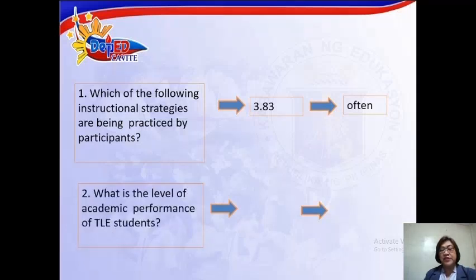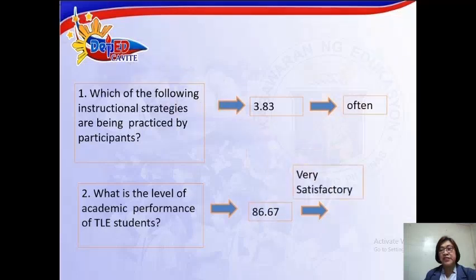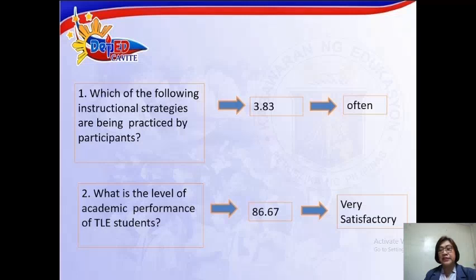For research question number two, the computed mean is 86.67, which was verbally interpreted as very satisfactory. This implies that the use of varied instructional strategies will dictate the academic achievement of students.